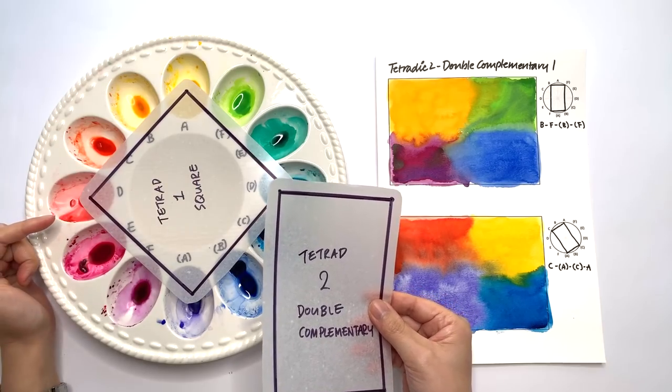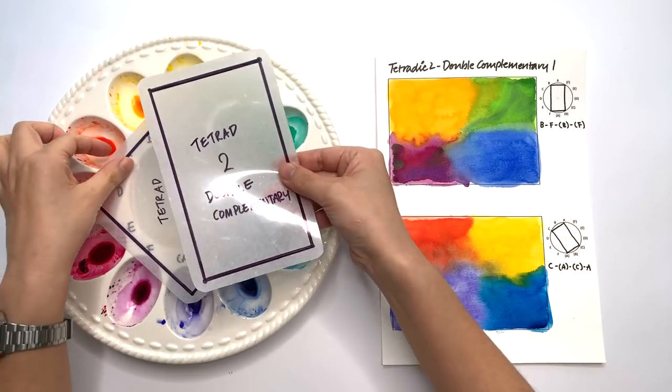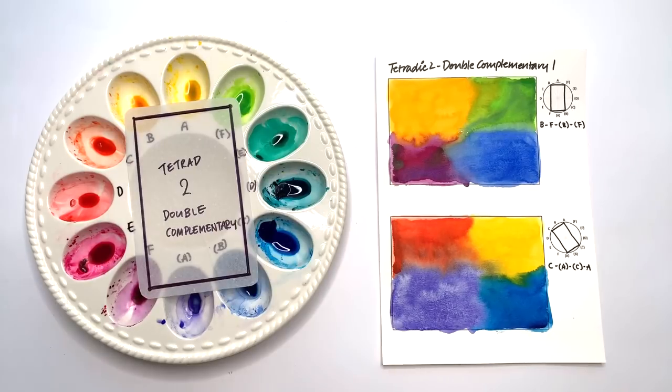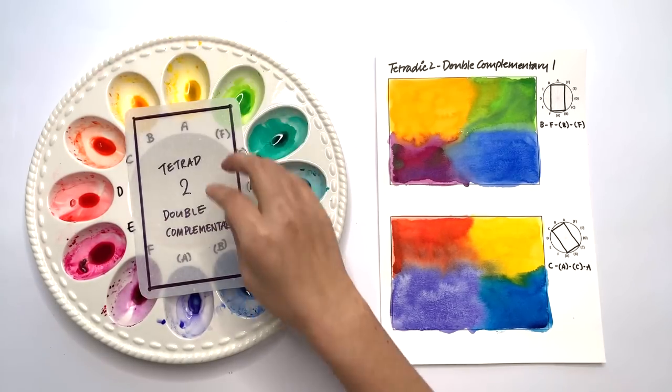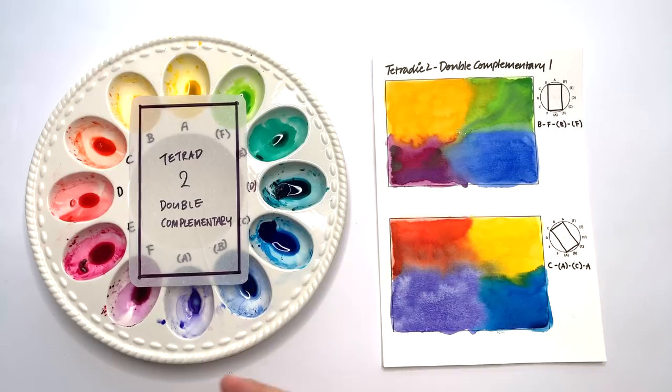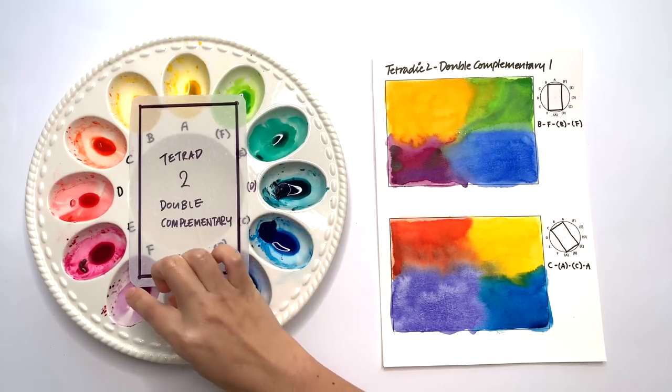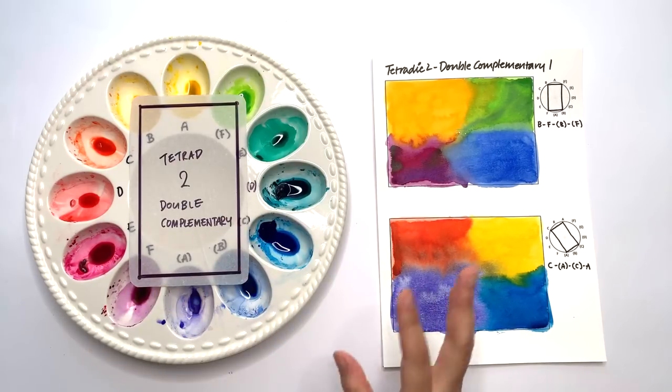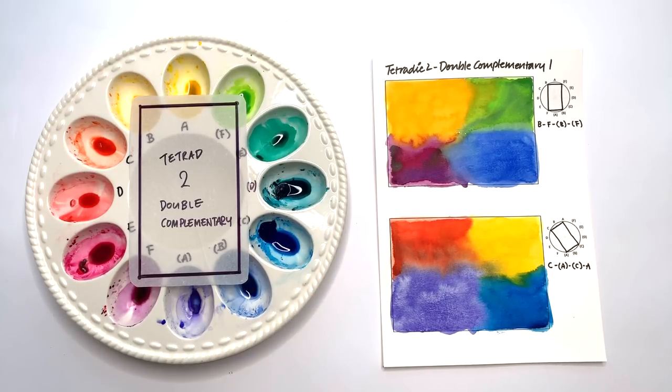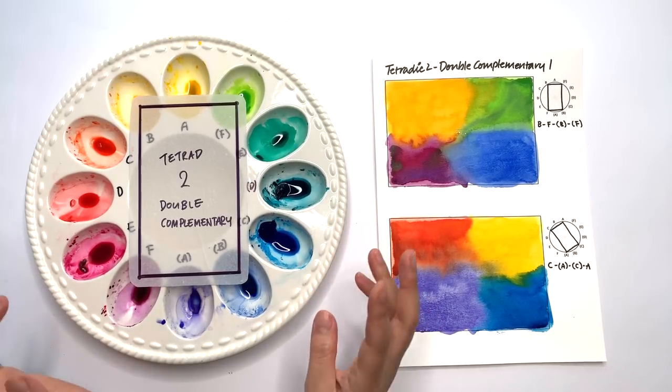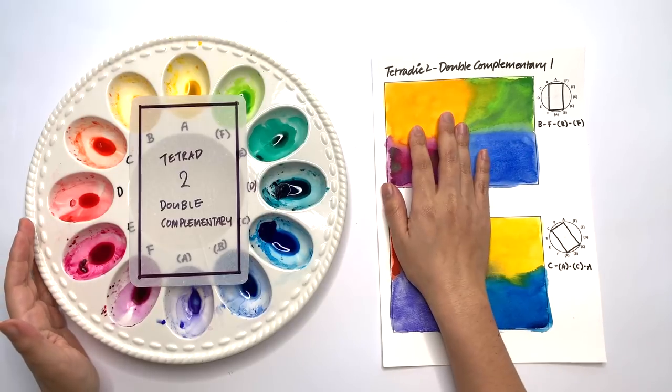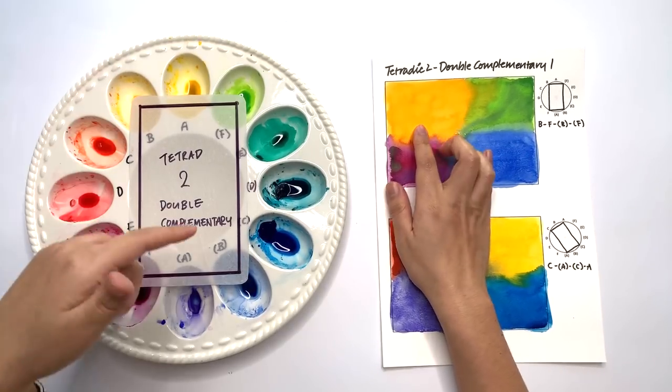Next up we're going to move on to a narrower shape. Whereas the square skipped two wells between the two nodes, we're going to move on to this which only has one well between the two nodes. And this shape has the name of double complementary because you have two pairs of complementary. In this case is the B pair and the F pair.